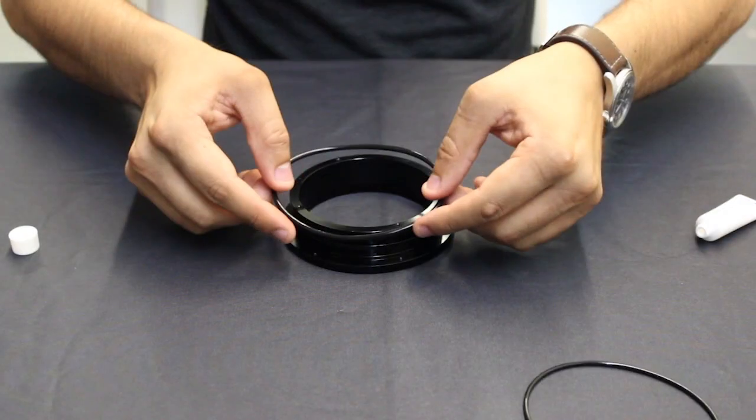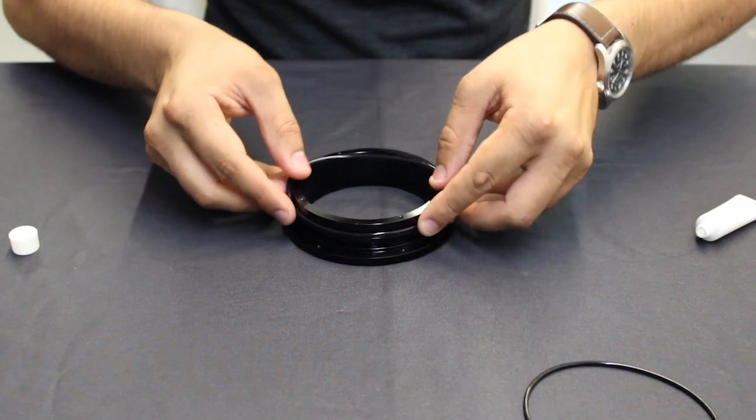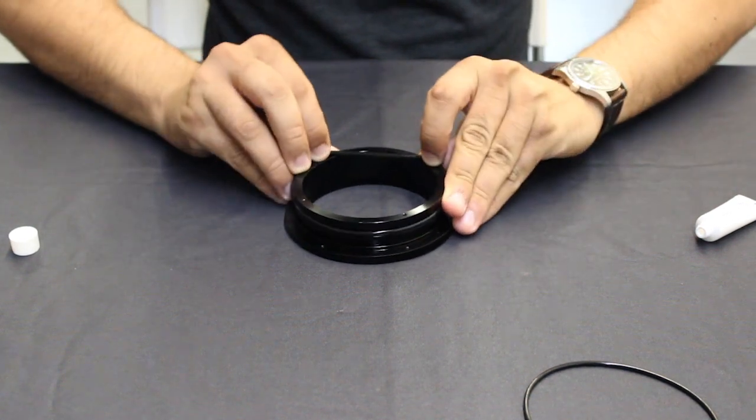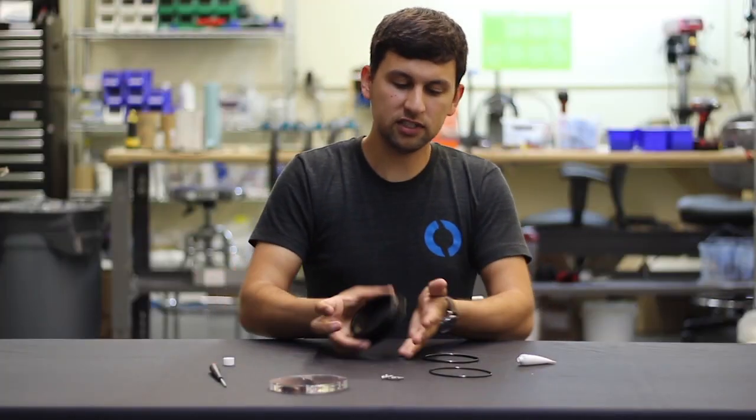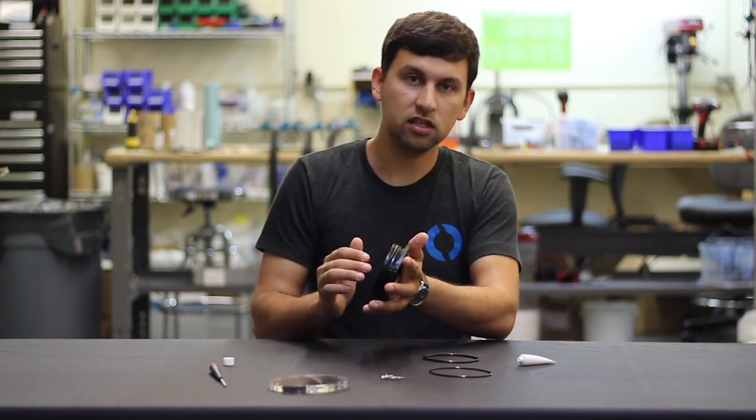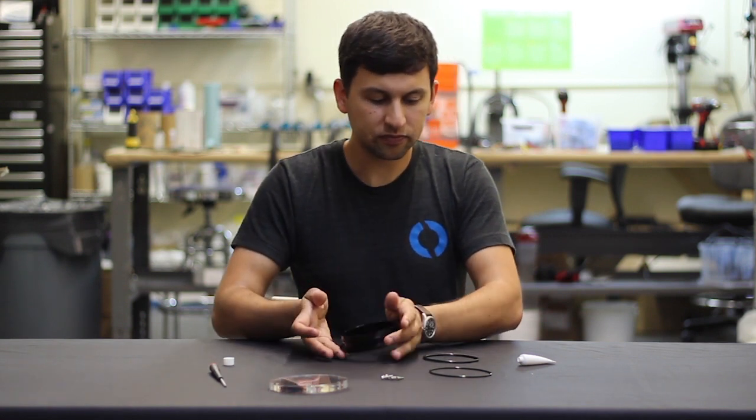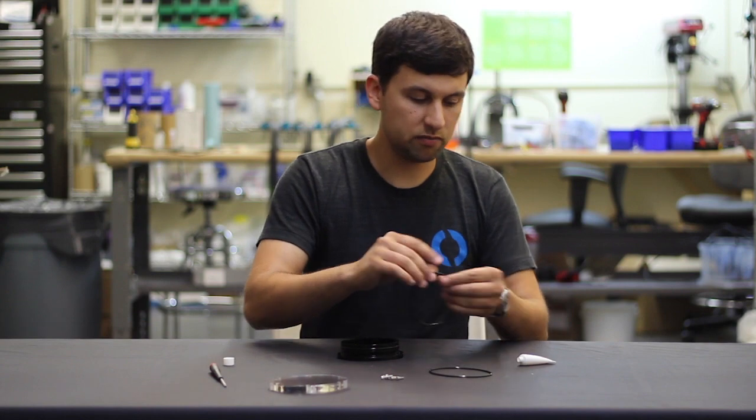To put the o-ring on the flange, I'm going to put it in from one side and then stretch it around the flange until it's fully seated in the o-ring gland. I'm going to repeat that with the second one.